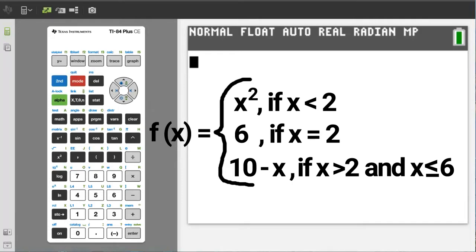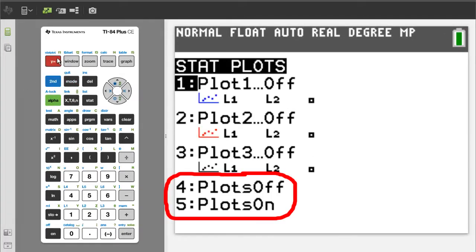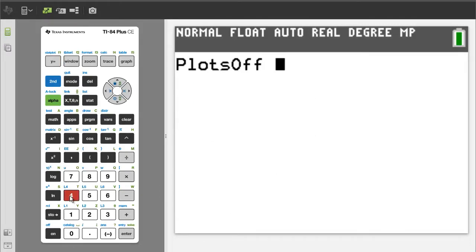But first, turn off stat plots. Press the second button, then the y equals button, which is the stat plot button. Number 4 is to turn stat plots off, and number 5 is to turn stat plots on. We want number 4. Press the 4 button. Now press the enter button. It says done, which means the stat plots are off. Press the clear button to clear this home screen.